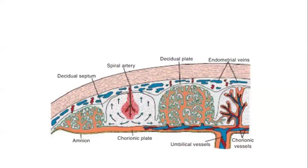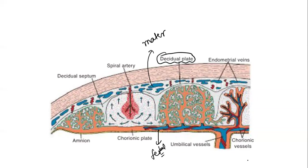To summarize placenta formation: there are two parts — fetal and maternal. The chorionic plate is the fetal part. A decidual plate is also formed, which separates the maternal from the fetal part. Here you have the villi, and between them are the intervillous spaces.